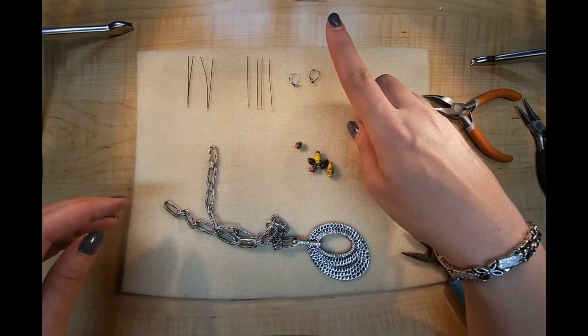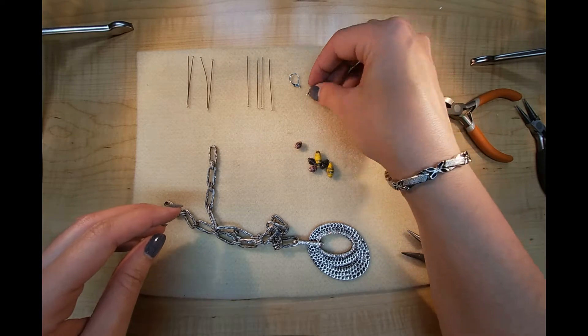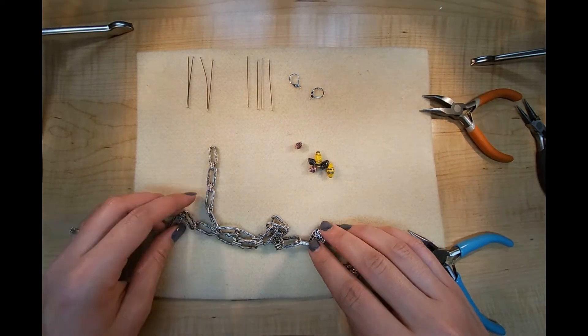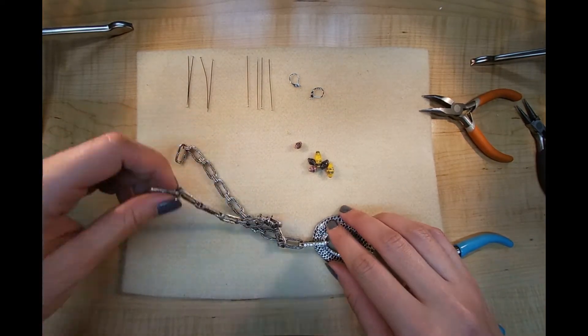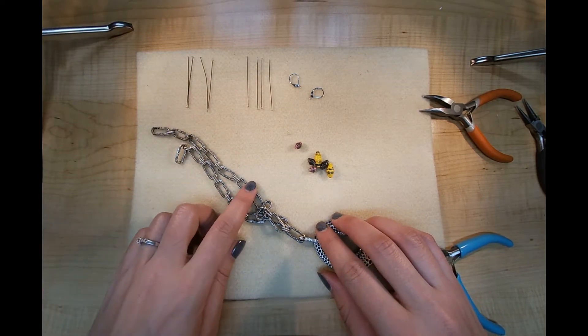And some head pins and some ear lever backs for the earring part. And I'm going to make a pair of earrings out of a couple loops out of this necklace.